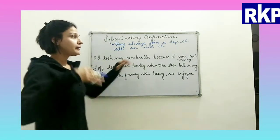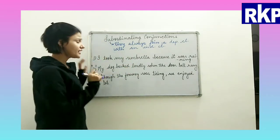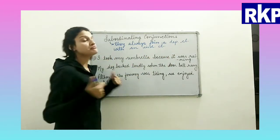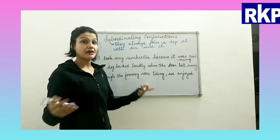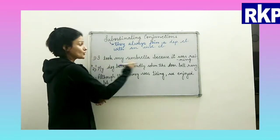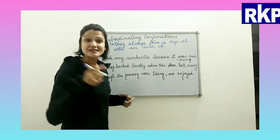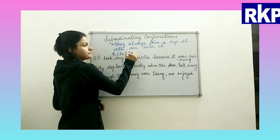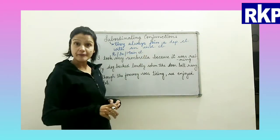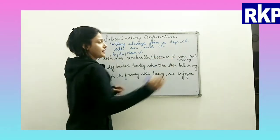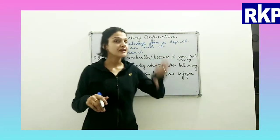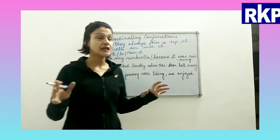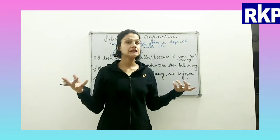So: 'I took my umbrella because it was raining.' There are two clauses here. 'I took my umbrella' makes complete sense on its own — it doesn't need help — so this is the principal or independent clause. 'Because it was raining' does not give complete sense on its own. We need to know something else as well.